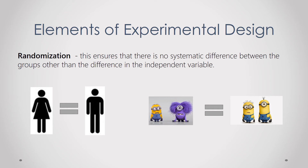Randomization ensures that there is no systematic difference between the groups other than the difference in the independent variable. When performing an experiment we randomly select participants, but the selection should be random and systematic. If we have two groups, they are selected at random, but we may prefer equal numbers of male and female participants, or equal numbers in the same age group, to avoid any systematic difference that may change the result due to age, preference, or gender.